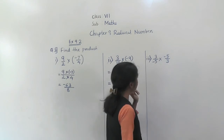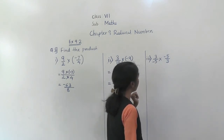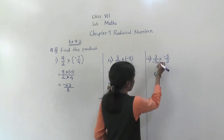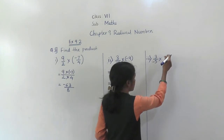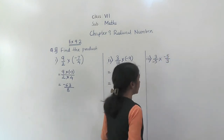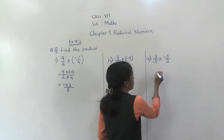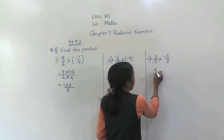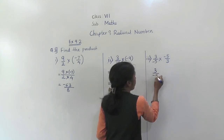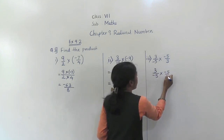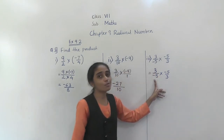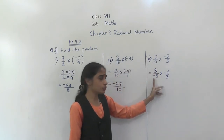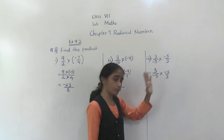Next example, the third one: 3 upon minus 5 into minus 5 upon 3. If you observe here, 3 upon minus 5 into minus 5 upon 3. You can do it by both ways.